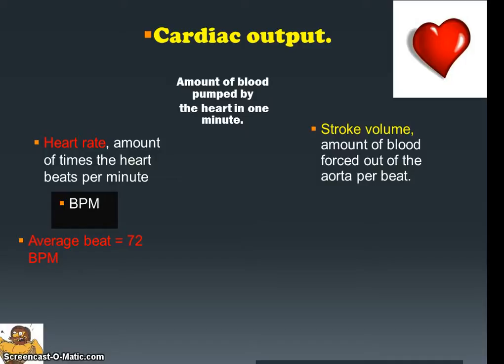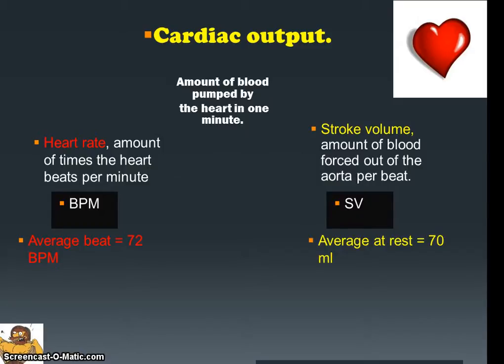Depending on how strong your heart can contract will determine how much volume of blood is forced out of the ventricles and around the body. This is also known as SV and is usually measured in millilitres. On average, our heart beats about 72 times per minute, and the amount of blood forced out from the ventricles into the body is about 70 millilitres for your average person.